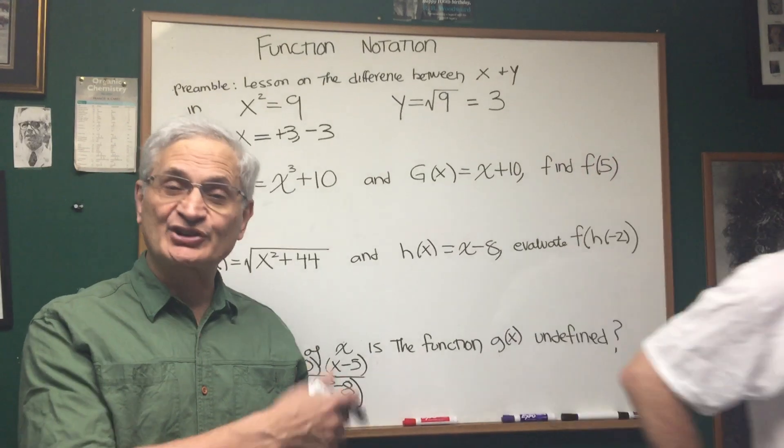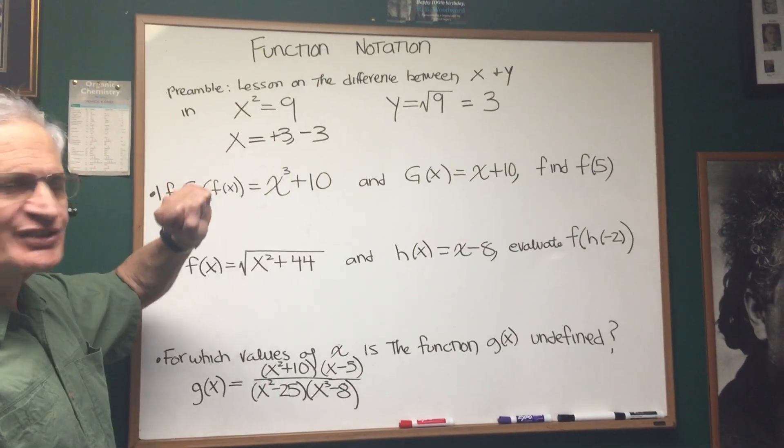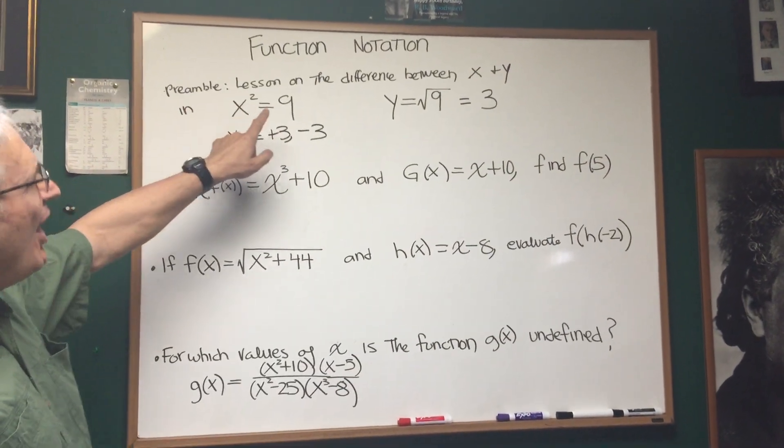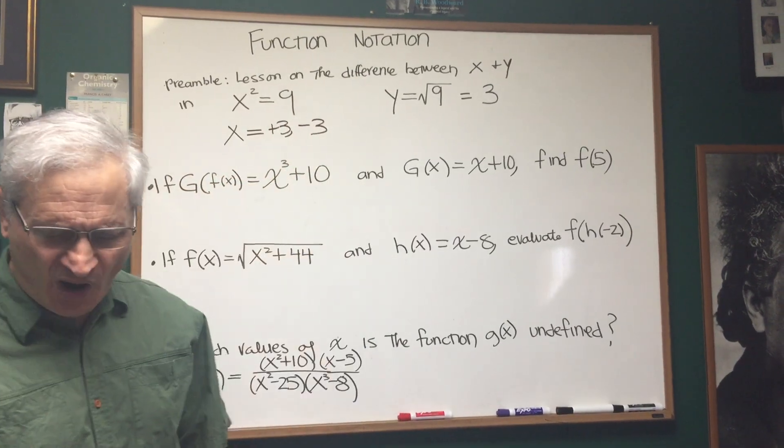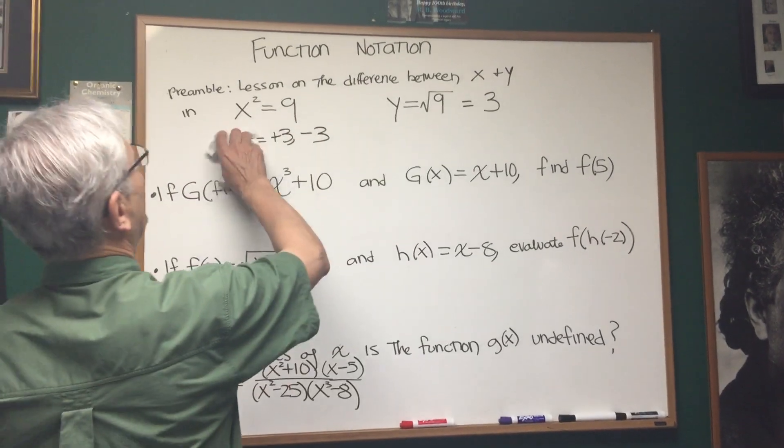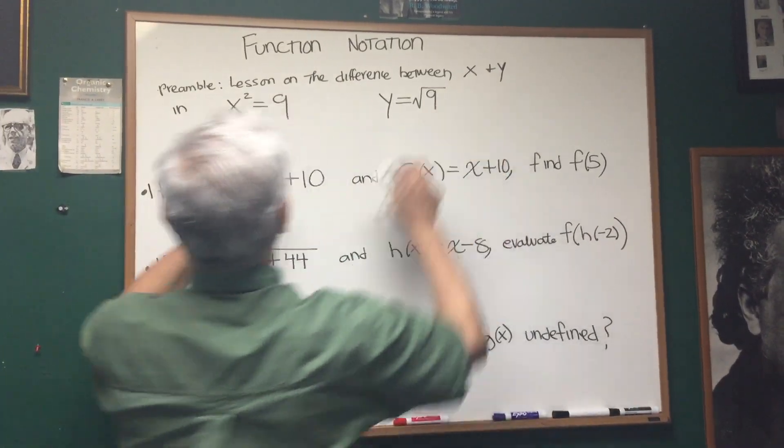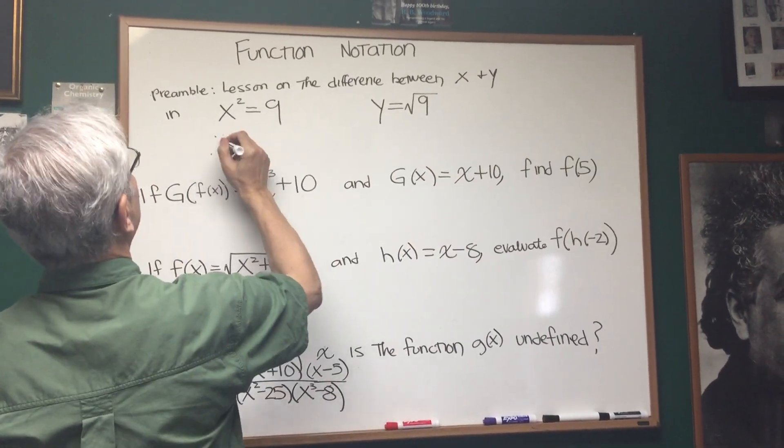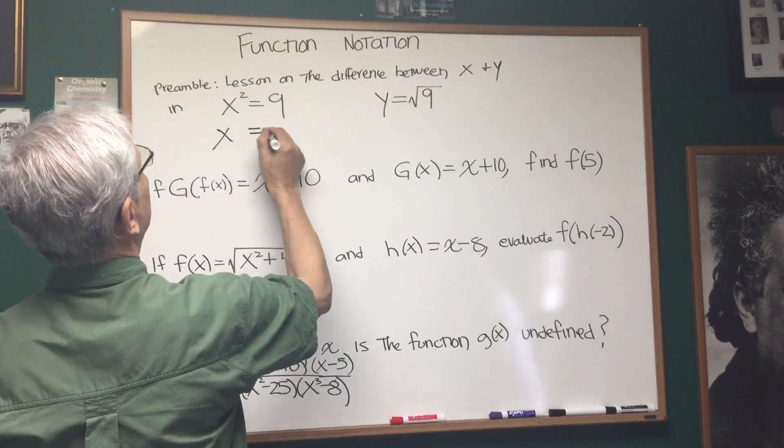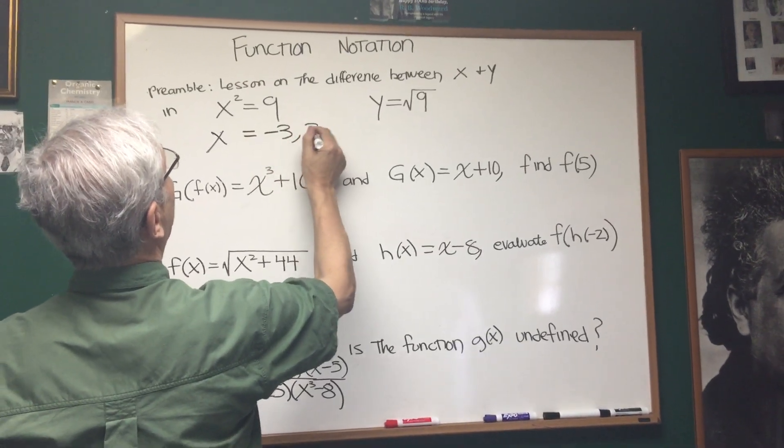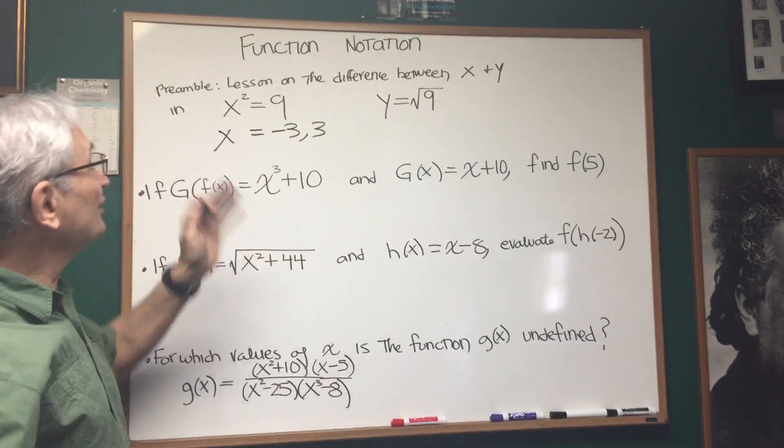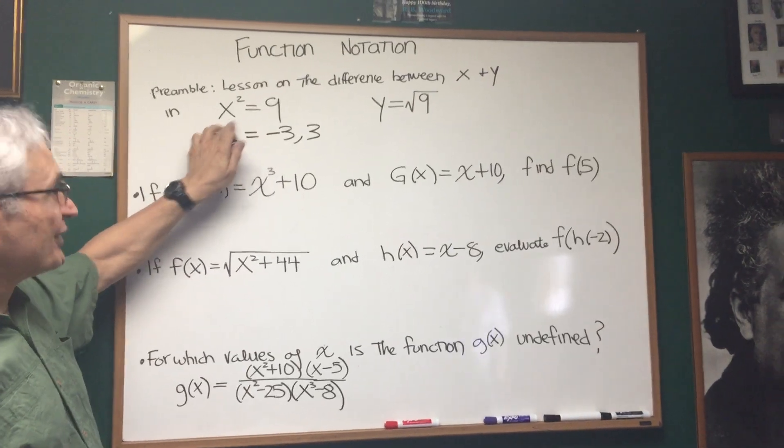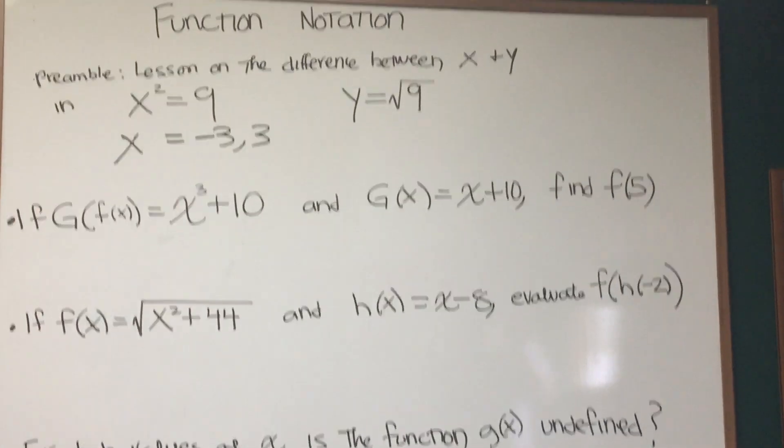Okay, Professor Blois here with function notation. And before we get to the subject, I want to give you a little preamble on the difference between x and y in these two expressions. Here we have the expression x squared equals 9, whose solution is x is equal to negative 3 and positive 3. Both are solutions to that equation, negative 3 squared is 9, positive 3 squared is 9.